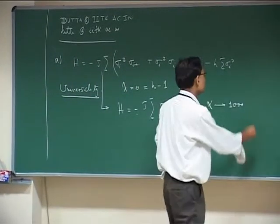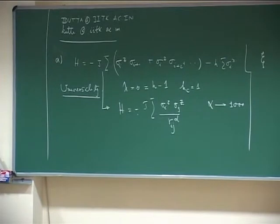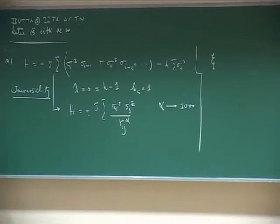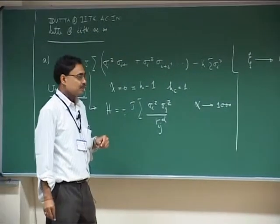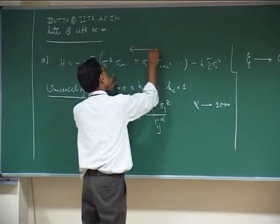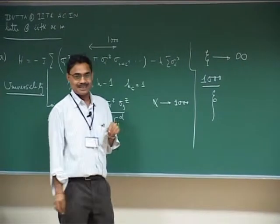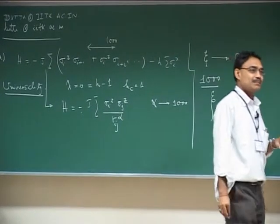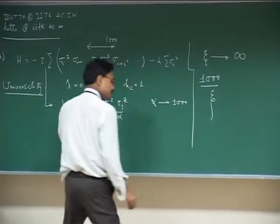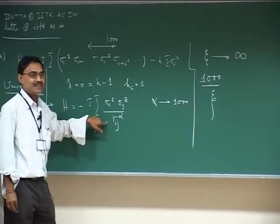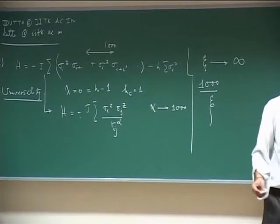Why does this happen? Because ξ is the length scale of the problem near a critical point — that is the correlation length, describing how two spins at some distance are correlated. ξ diverges near a critical point. So if your range of interaction is a thousand, near the critical point that thousand must be scaled with ξ, and thousand divided by ξ goes to zero. So essentially it becomes a short-range problem. But for truly infinite-range (power-law) interactions, there is no fixed length scale to compare against, and critical behavior gets altered.